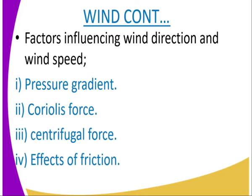Now we have the factors that influence wind direction and wind speed. We have the pressure gradient — from high pressure to low pressure. Then there is the Coriolis force, the centrifugal force, which is responsible for the shape of the Earth, and then the effect of friction.